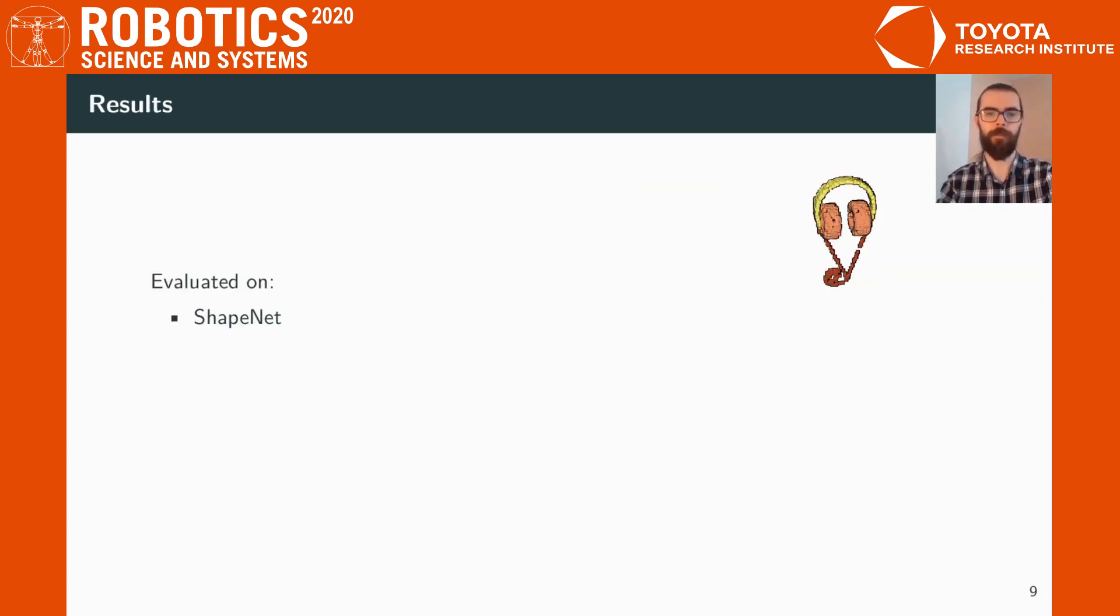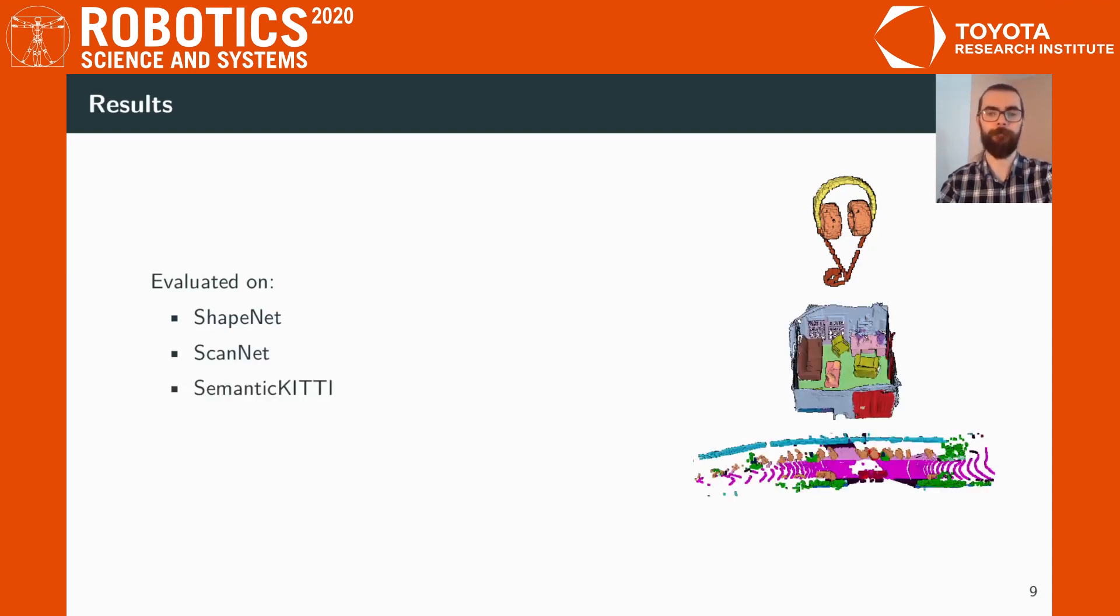We evaluate our results on the ShapeNet, ScanNet and SemanticKITTI datasets. We show competitive results in ShapeNet and the ScanNet dataset. In the case of SemanticKITTI, we establish a new state-of-the-art with 52.9 intersection over union.